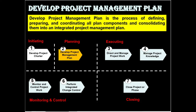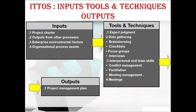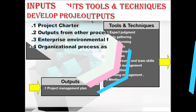Hope you understood its definition and the key benefit of this process. Let's quickly go through its ITTOs in detail. In inputs we have the project charter, outputs from the other processes, enterprise environmental factors, and organizational process assets. In tools and techniques we have expert judgment, data gathering techniques — brainstorming, checklist, focus groups, and interviews — interpersonal and team skills, and meetings. In outputs we have only one output: the project management plan. Let's discuss its ITTOs in more detail, starting with inputs.